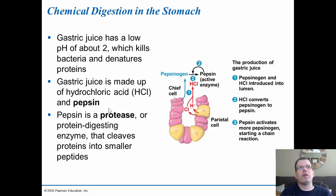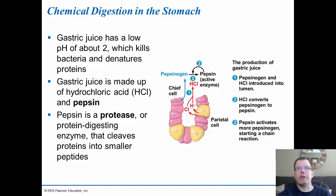Gastric juice has a low pH of about 2, which kills bacteria and helps denature proteins. It is made up of hydrochloric acid and pepsin, which is a protease — meaning it breaks down proteins by cleaving them into peptides. This protein digestion driven by pepsin is the primary chemical digestion occurring in the stomach.